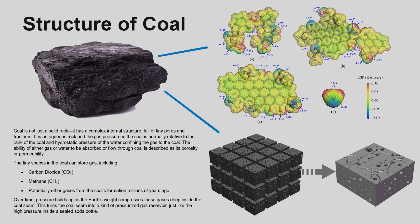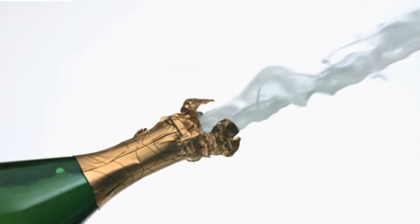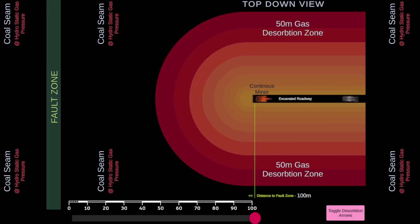Over geological time, pressure has built up and compressed the gases deep inside the coal seam. This turns the coal seam into a kind of pressurised gas reservoir, similar to the pressure inside a champagne bottle. When mining operations extract the coal seam, the pressure balance is disturbed and the gas is released from the coal.